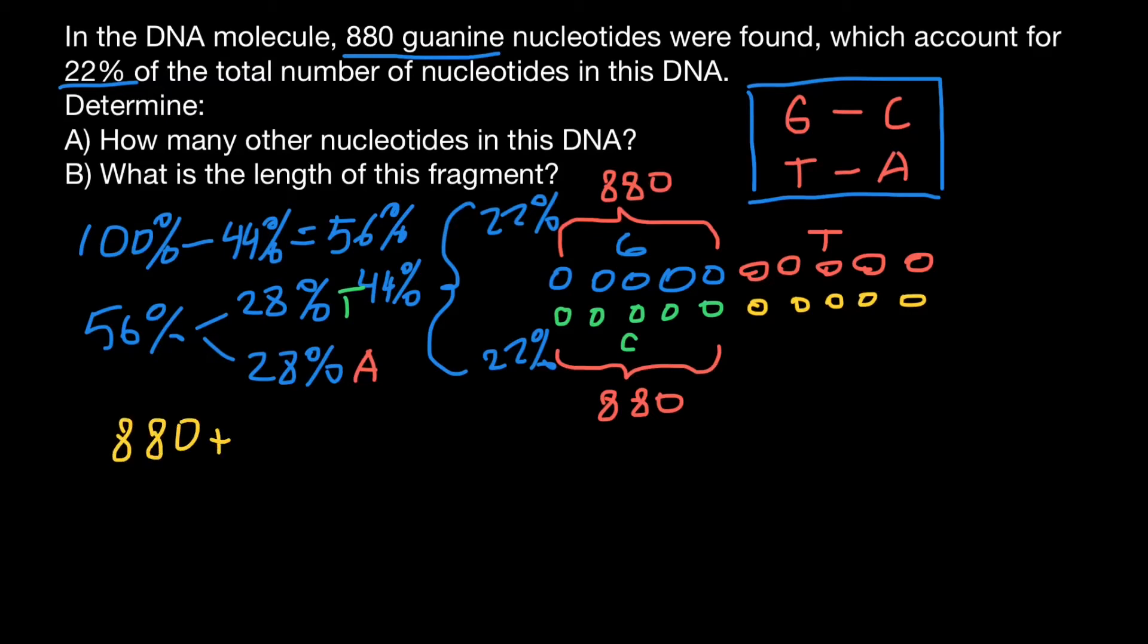880 plus 880, this is guanine and this is cytosine, so it makes together 1760, which would account for 44%. So if we divide this number by 44, we are going to find how much is 1%, and this is going to be 40. So 40 equals to 1%.